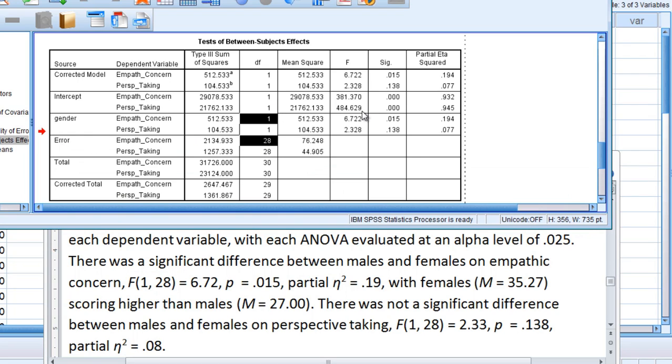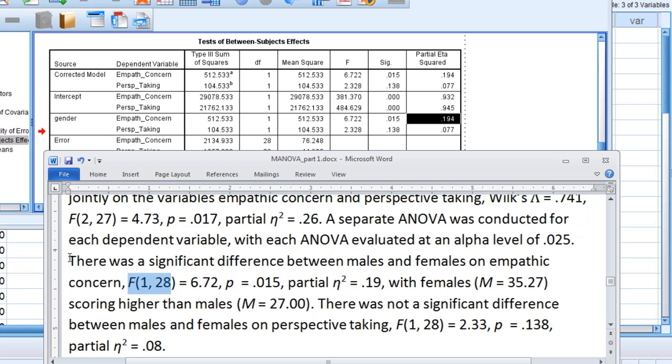1 and 28 equals 6.72, P is 0.015, and partial eta-squared of 0.19. So you can see all of that right here.